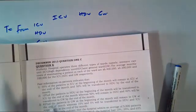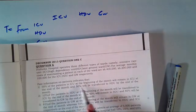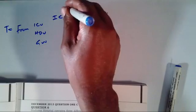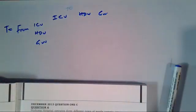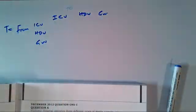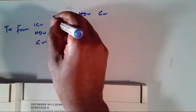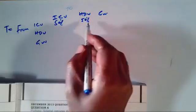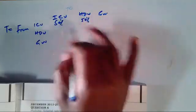In note number one, we are told that 50% of the patients in ICU at the beginning of the month will remain in ICU. So from ICU to ICU is 50%. We are also told that 50% will leave ICU for HDU. So from ICU to HDU is 50%. These two account for 100%, meaning nobody moves from ICU to General Ward.